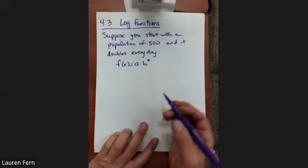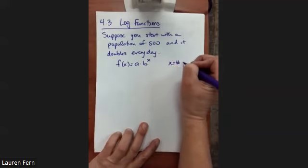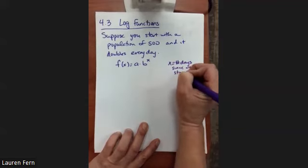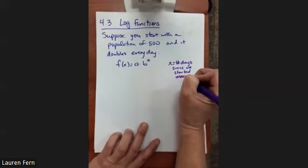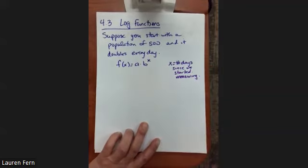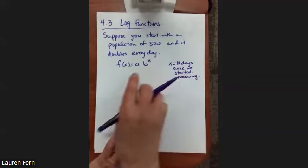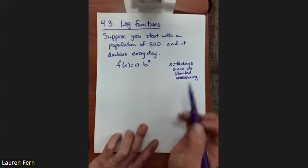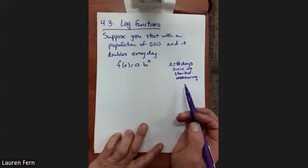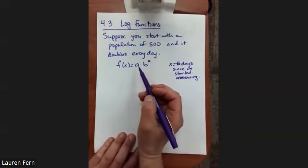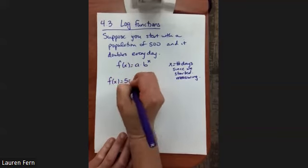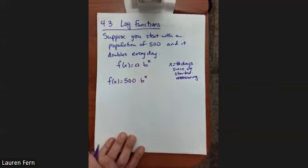The first thing I want us to do is find the equation of this exponential function. I'm going to let x represent the number of days since we started measuring this population. By defining x to be this, that gives us our value of a, which is 500 — the starting measurement.